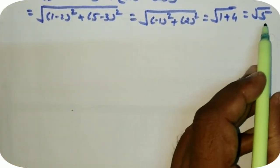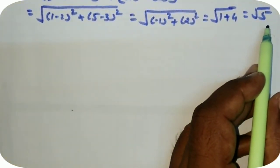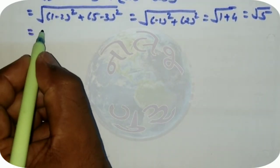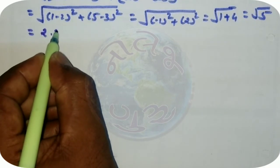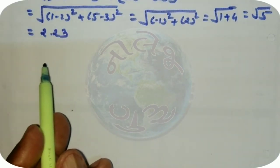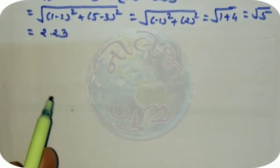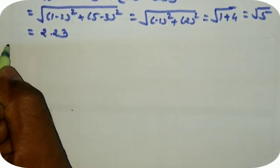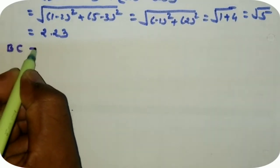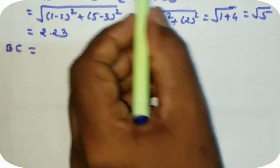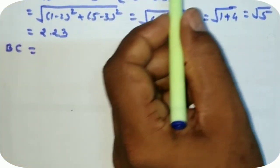દોરણ માં વર્ગમૂળ સોતાસ જોઈ ગયાય છે, એ પ્રમાણે આપણે જોઈએ તો આપણું એ બી આવે છે 2.23. વર્ગમૂળ અસ્મે સંખ્યા છે ની ચોક્કસ કિંમત નથી, પાસ્રે પટતી કિંમત આવે છે 2.23. એ જ રીતે કિંમત x.